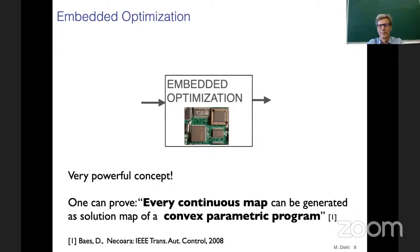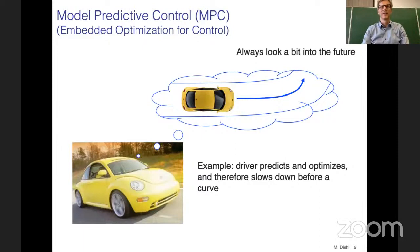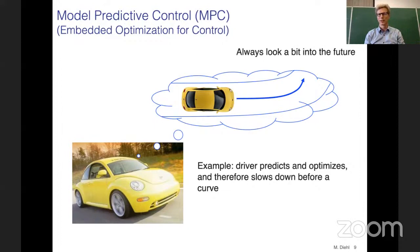One of the prime examples of embedded optimization in control is model predictive control. You can imagine it works a bit like driving a car — we have our sensors, we watch the situation, look at the streets, and make a prediction. We always look a bit into the future to estimate what's happening there, then make a plan. This plan allows us to act proactively — for example, we slow down before we see a curve. That's predictive action.